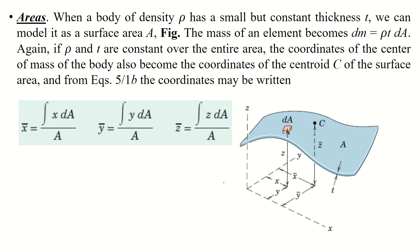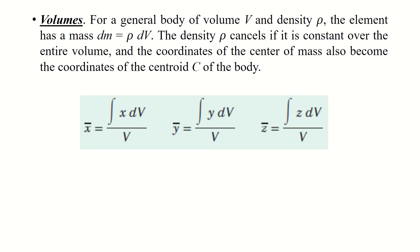For volumes: for a general body of volume V and density ρ, the element has a mass dm = ρ dV. The density cancels if it is constant over the entire volume, and the coordinates of the center of mass also become the coordinates of the centroid C of the body. From the equation, it becomes simply x dV/V, y dV/V, and z dV/V.